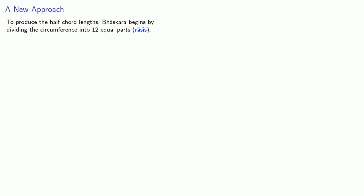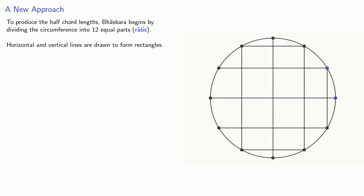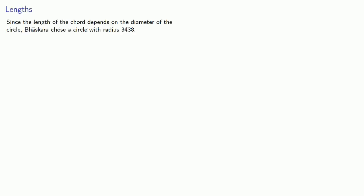To produce the half-chord length, Bhaskara begins by dividing the circumference of a circle into 12 equal parts, which are known as racis. Horizontal and vertical lines are drawn to form rectangles, and additional lines are drawn to form triangles. Since the length of a chord depends on the diameter of the circle, Bhaskara chose a circle with a radius of 3438.